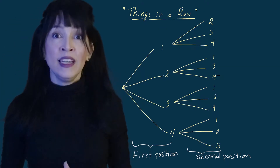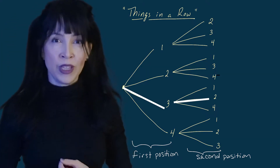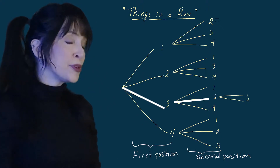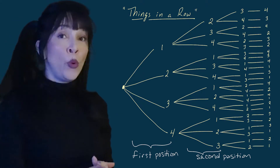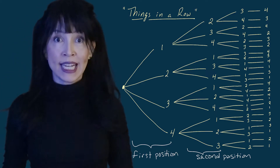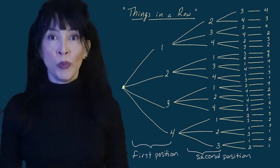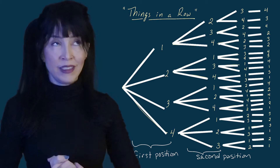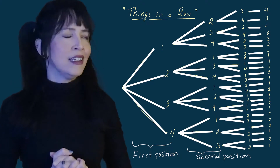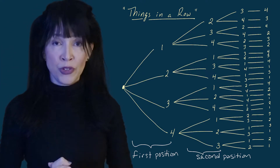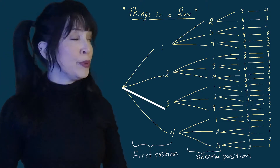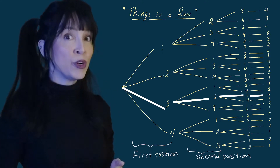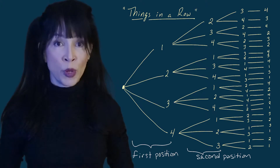We're going to continue and look at the third position. If I already put person three in the first position and person two in the second position, I'm left with persons one or four for the third position, and then the last person goes in the last position. There are 24 paths through this tree because we have four times three times two times one, which is 24. Each pathway through this tree is a way to line up my friends.